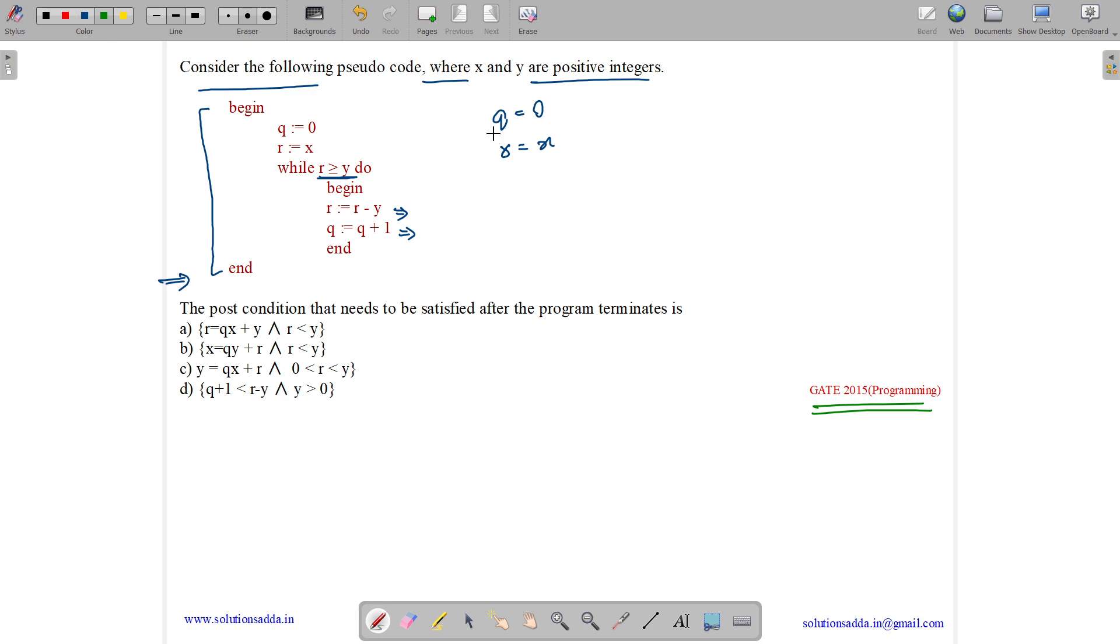What happens initially? q is 0 and r is x. We run this loop till r is greater than or equal to y, and when the loop terminates, what is the termination condition? Loop terminates when r becomes less than y, because when r becomes less than y we come out of this loop.